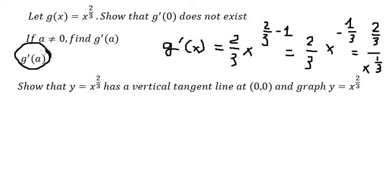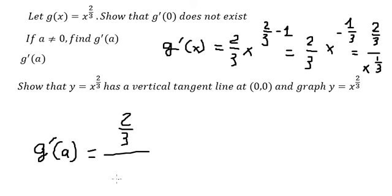The question asks to find the first derivative of the function g at s equal to 8. So the answer for this one, we have 2 over 3, over 8 to the power of 1 over 3.